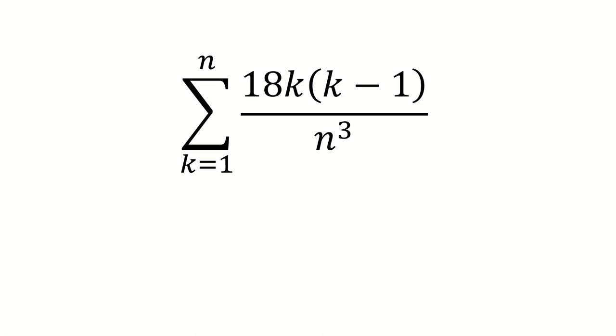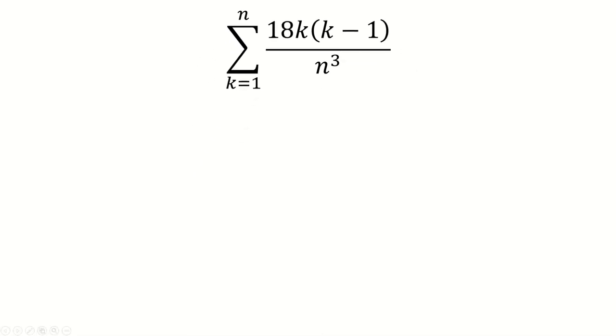We're given the sum from k equals 1 to n of 18k times k minus 1 over n cubed. Let's factor out the 18 over n cubed, since that does not depend on k.